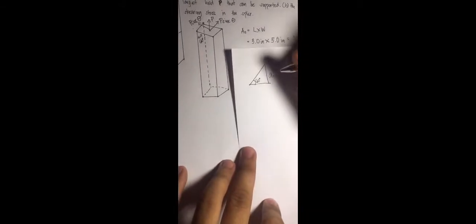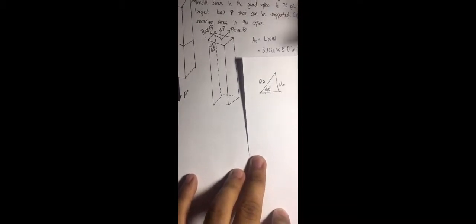So, when we draw this 60-degree angle, right here, 60 degrees, the opposite side, which is the A naught, and the hypotenuse, would be A theta. And then, therefore,